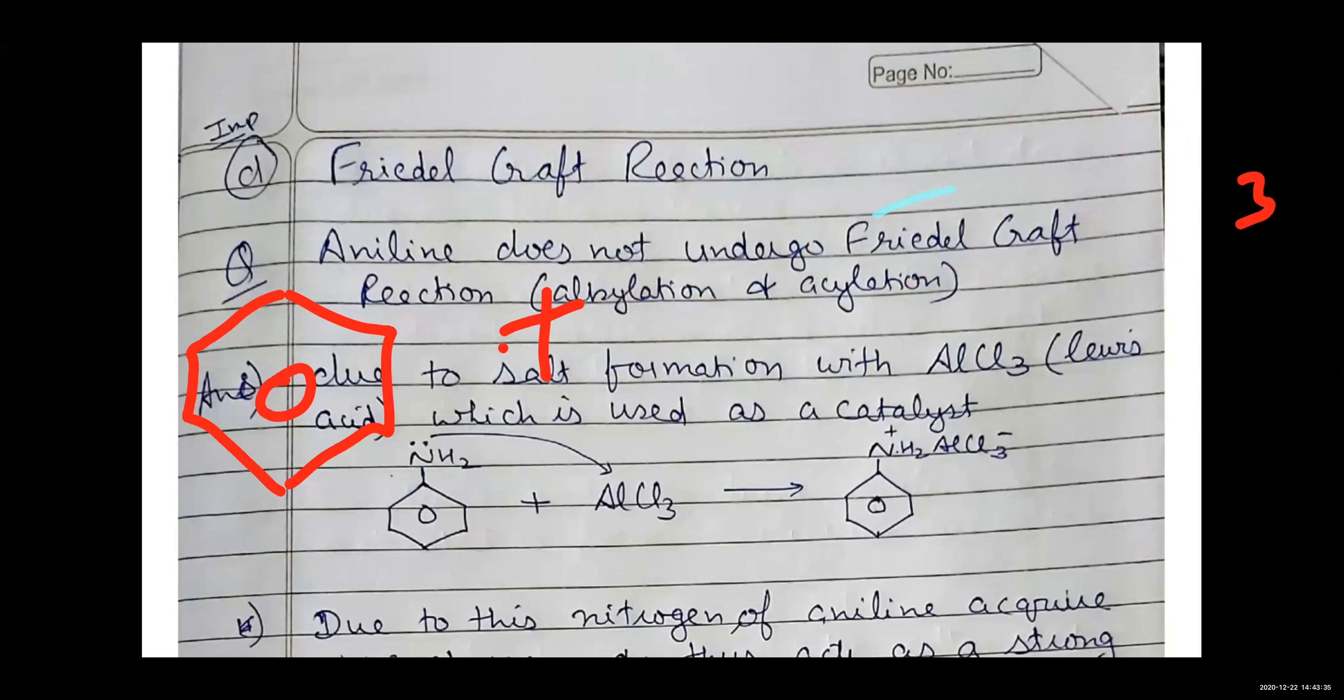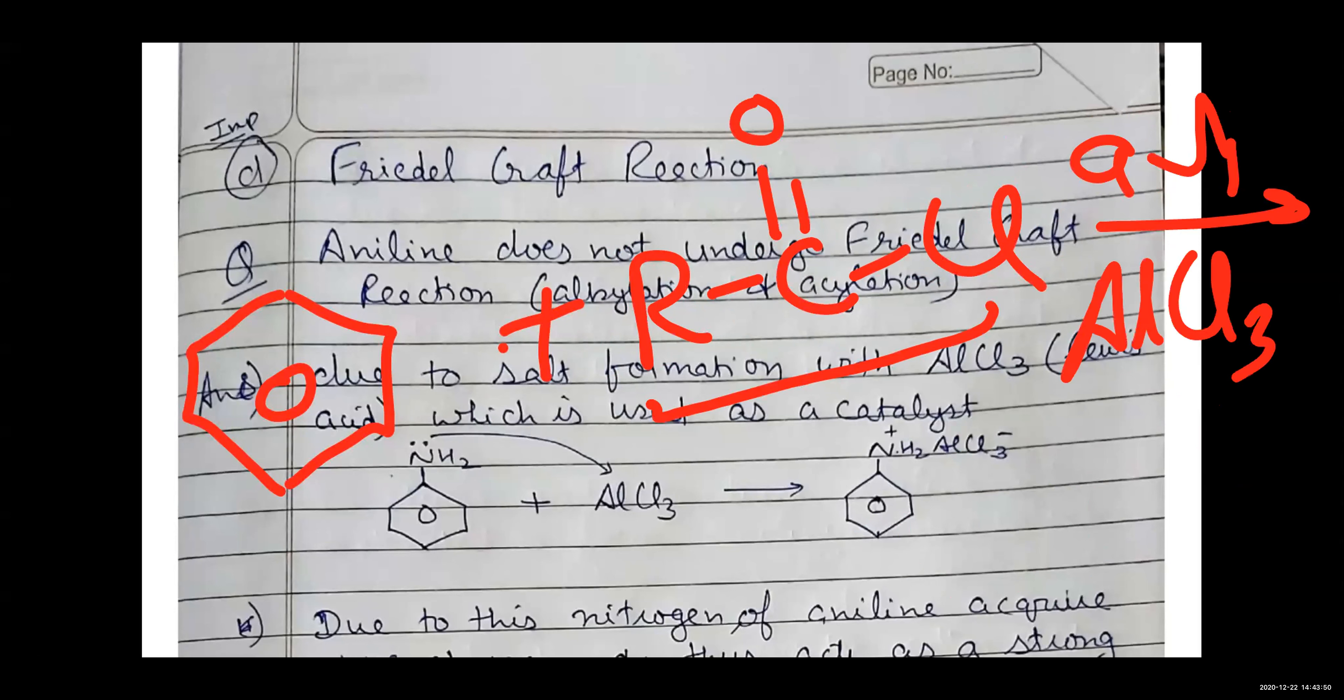Next is Friedel-Craft acylation. In acylation we introduce RCO group. We react with acid chloride in the presence of anhydrous aluminum chloride. We also have acylation and the R group will come here in the benzene ring.